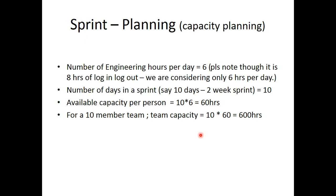This is the Capacity Planning math per person for a 10-member team. The number of engineering hours per day per person is 6. Number of days in a sprint is 10, which is a 2-week sprint. Available capacity per person is 10 × 6 = 60 hours. For a 10-member team, the team capacity is 10 × 60 = 600 hours. At the end of the sprint planning meeting, using Jira Query Language, we can see how many hours each person has planned for — bringing transparency and collaboration.